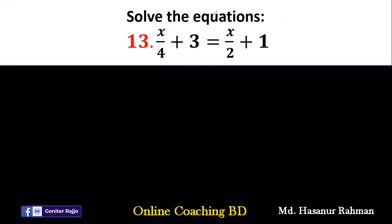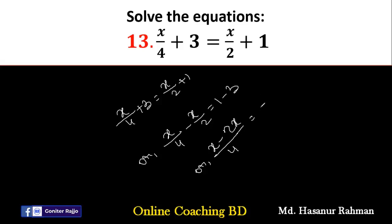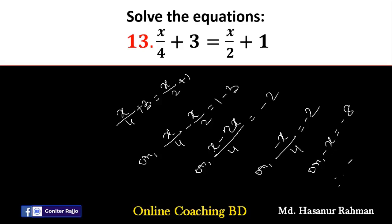Number 13 says x by 4 plus 3 equal to x by 2 plus 1. Rearranging: x by 4 minus x by 2 equal to 1 minus 3. The LCM of 4 and 2 is 4. So 4 divided by 4 is 1, giving x; minus 4 divided by 2 is 2, giving 2x. So x minus 2x is minus x divided by 4, equal to minus 2. Therefore minus x equal to minus 8, and dividing by minus 1 gives x equal to 8.